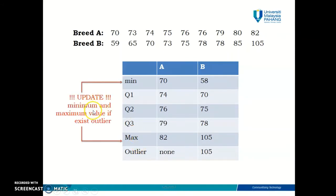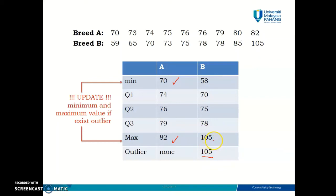You need to update your minimum and maximum values if there are outliers in any of the data sets. For Breed A, we determined in the previous video that it has no outlier, so the minimum and maximum values are fine — nothing to update. For Breed B, since 105 is the outlier, the maximum value needs to be updated, because in a box plot the minimum and maximum values exclude all outlier values.